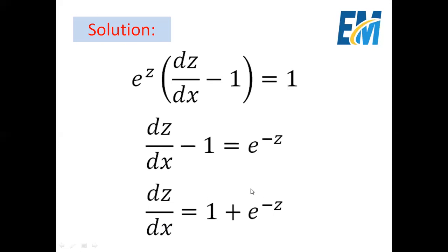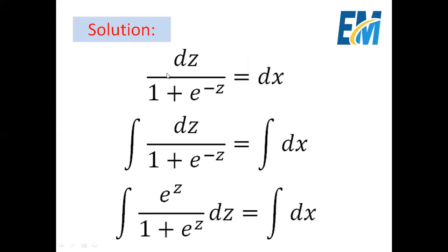So we can separate the two variables. We will have dz over this term equal to dx. So, we can write dz over 1 plus e to the power minus z equals dx. We can perform integration for both sides. The integral of dz over 1 plus e to the power minus z equals the integral of dx. Inside the integral, we can multiply both the numerator and denominator by e to the power z. So, we have e to the power z over 1 plus e to the power z dz equals the integral of dx.